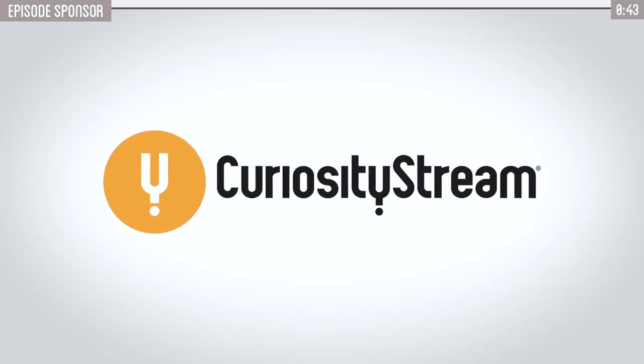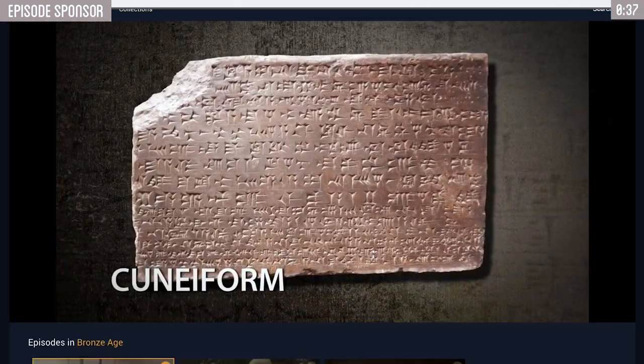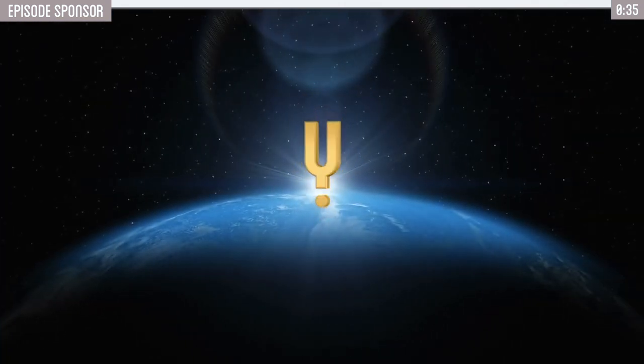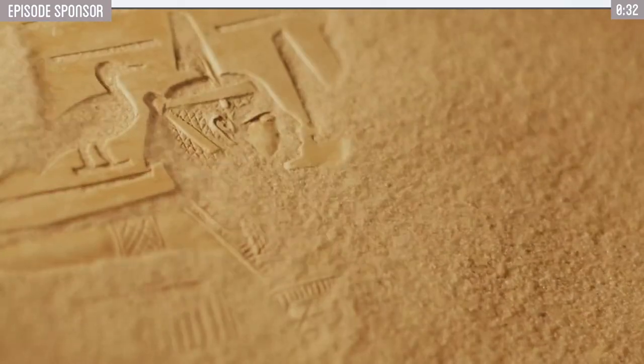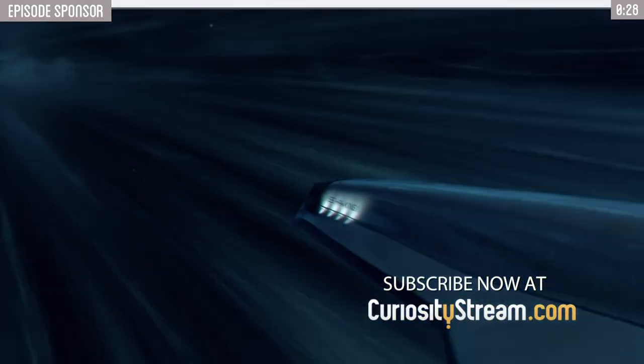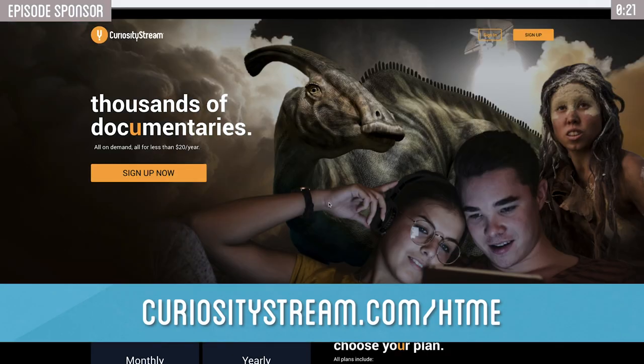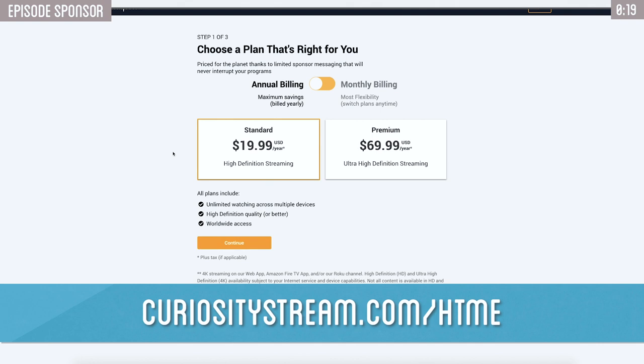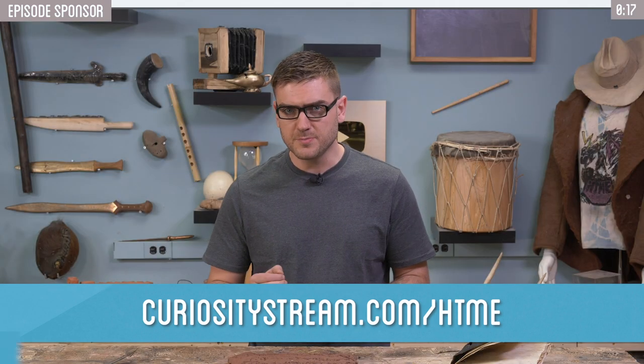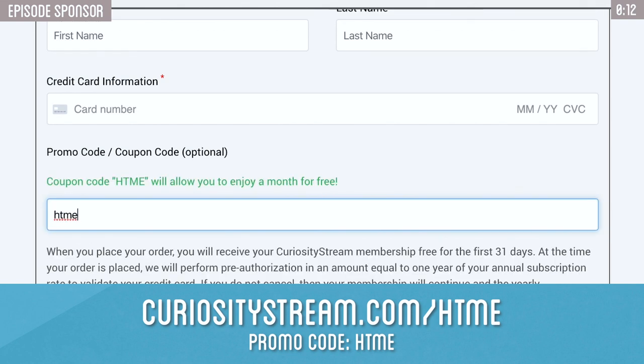But first, thank you to today's sponsor, CuriosityStream. To help do some initial research on the origins of written language, I was able to use CuriosityStream to access several excellent documentaries that helped set the stage. CuriosityStream is a streaming service with thousands of documentaries and non-fiction titles on pretty much every subject, spanning science, nature, history, technology, society, and lifestyle, with new titles added weekly. The best part is it's only $20 a year. Go to curiositystream.com slash htme for unlimited access to world's top documentaries and non-fiction series. And for our viewers, use the promo code htme when prompted during the sign-up process and your membership is completely free for the first 30 days.